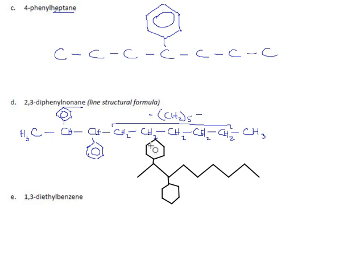And hexagon off of this. And hexagon gets a circle inside it. There's my crudely drawn line structural formula for 2,3-diphenylnonane. Nine carbons with two benzenes stuck onto it.